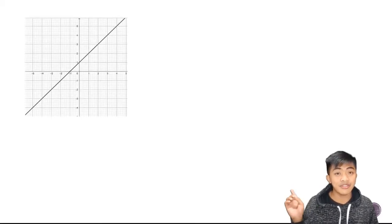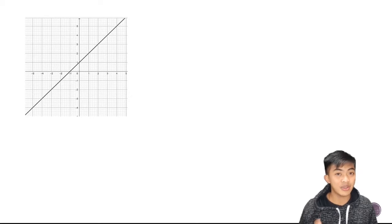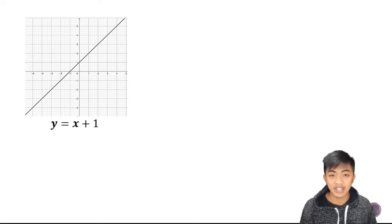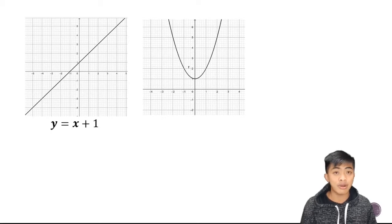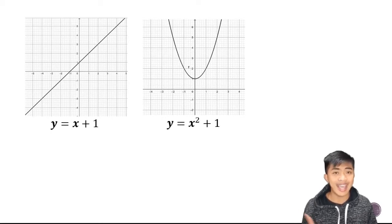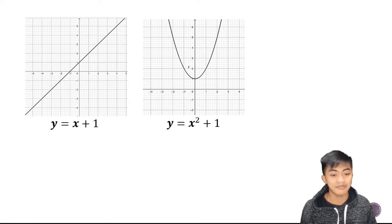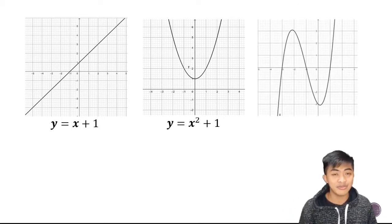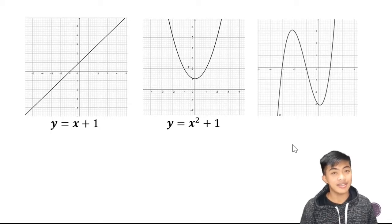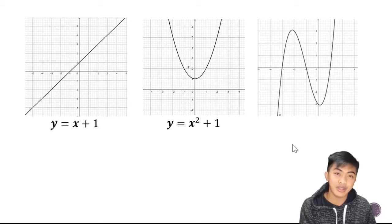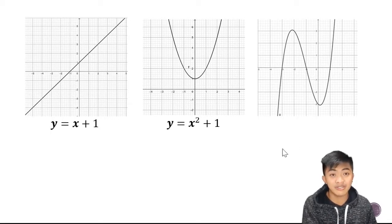This is a graph of a straight line, and its equation looks like this — it is a linear function. Now, this is a graph of a parabola, and its equation looks like that — it's a quadratic equation. And in one of my previous videos, we learned that this is a graph of a higher-degree polynomial function.